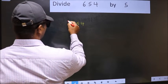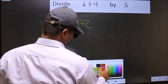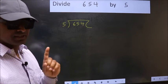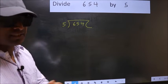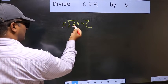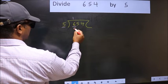654 and 5 here. This is your step 1. Next, here we have 6 and here 5. A number close to 6 in the 5 table is 5 once 5.